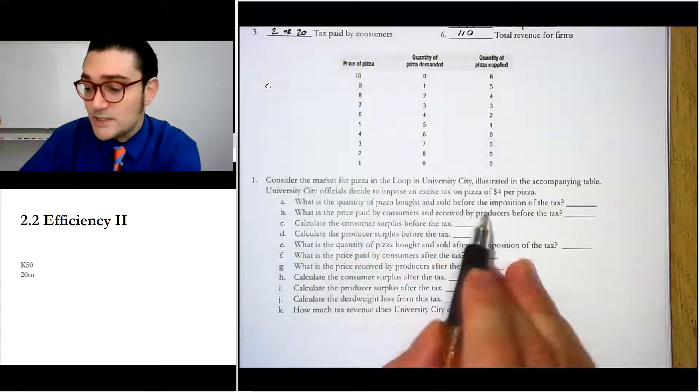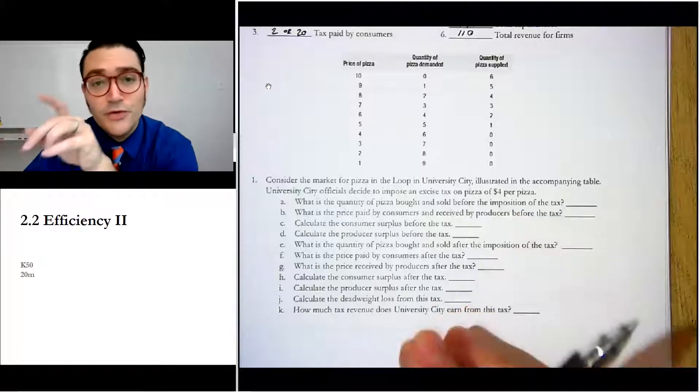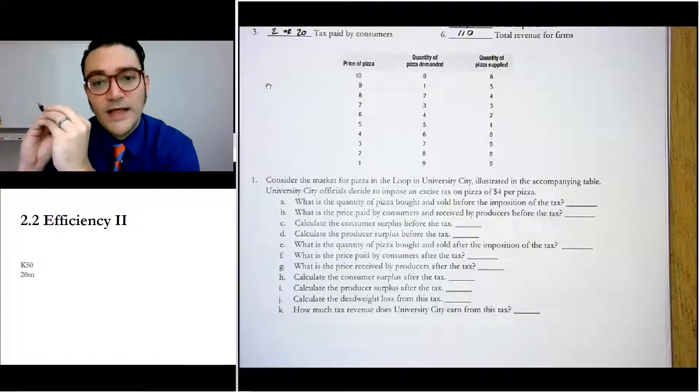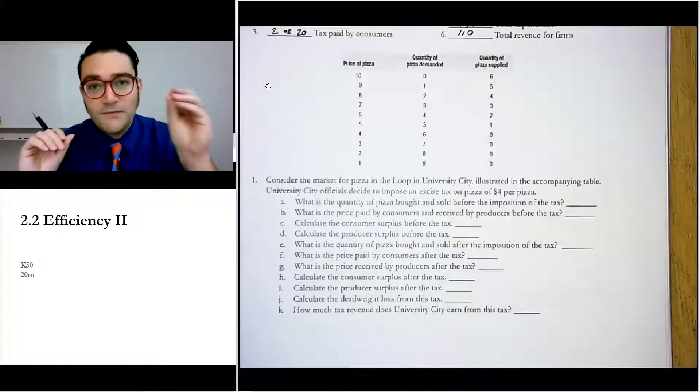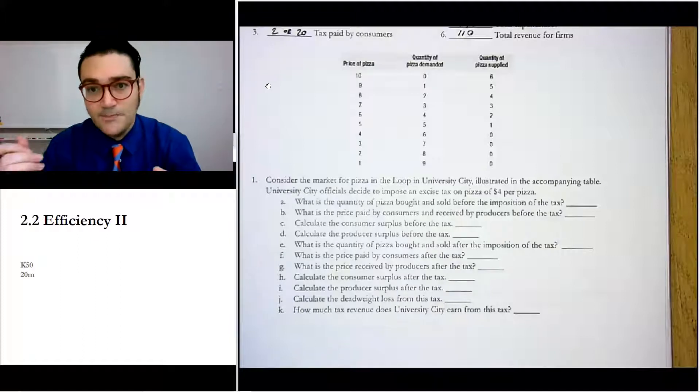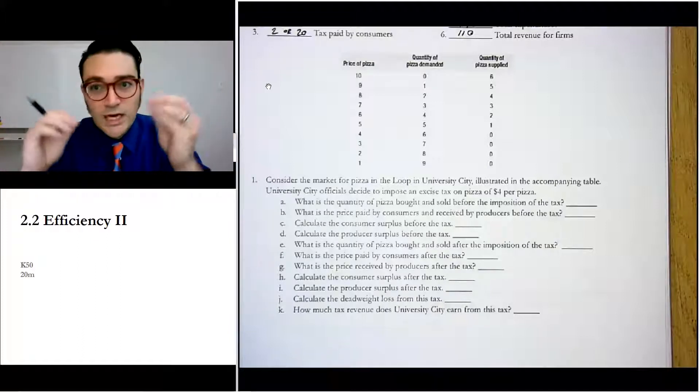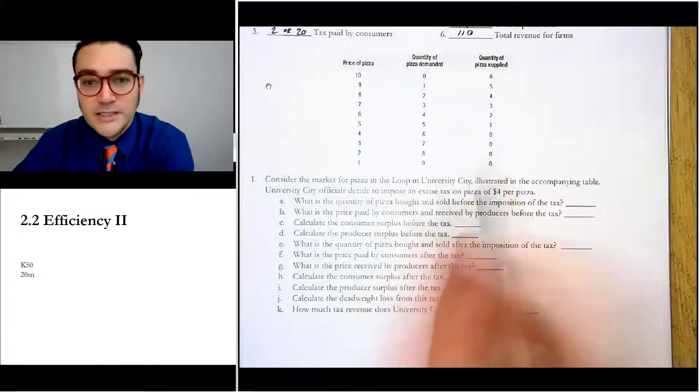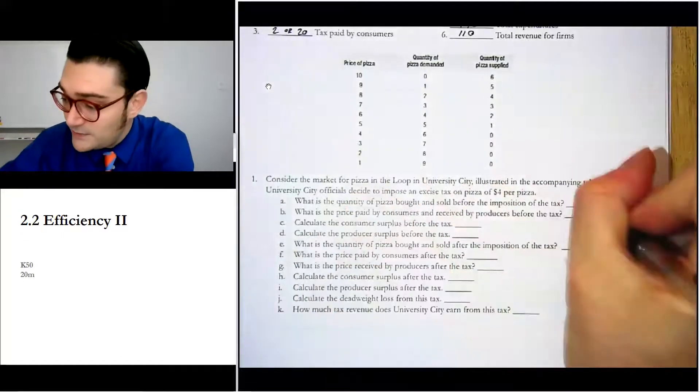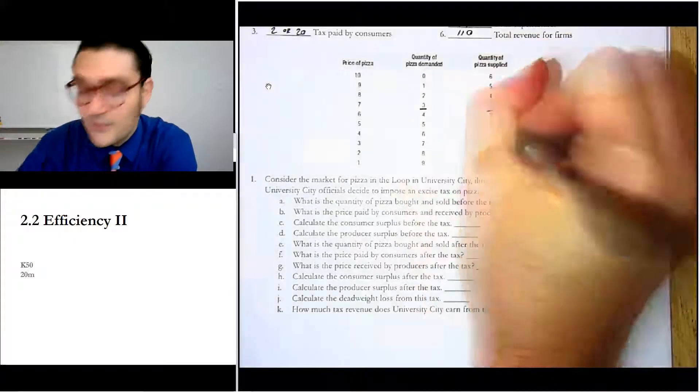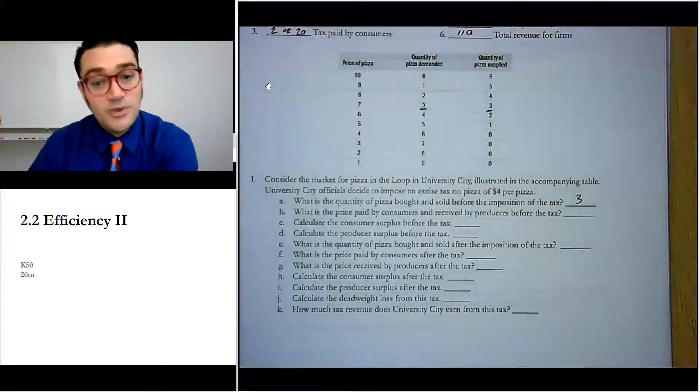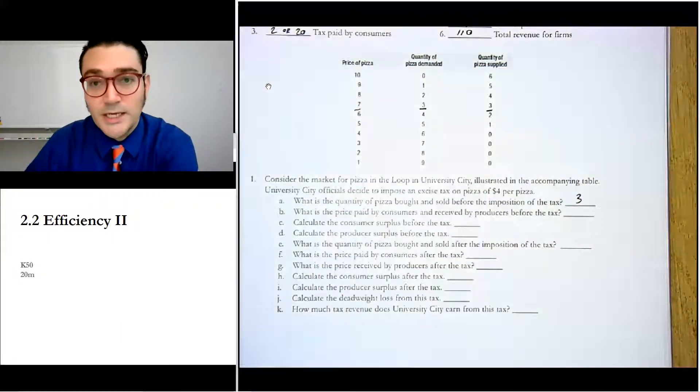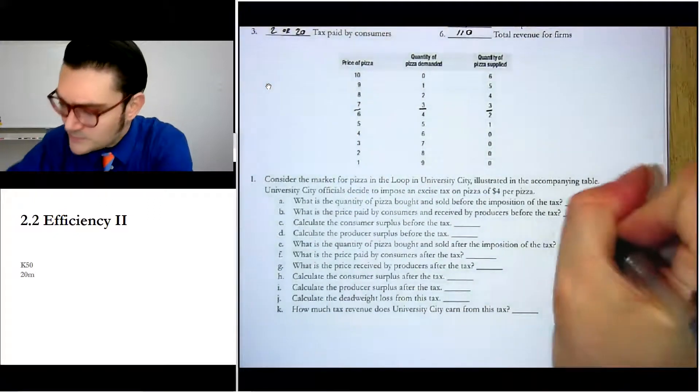Alright, so the first one says the quantity of pizza bought and sold before the imposition of the tax. We know that when there's no tax and this is a nice competitive market, then that quantity is going to be where quantity of pizza demanded equals quantity of pizza supplied. So we'll look in the two columns there and see where they're equal. Two, four, three, three, three. There we go. So it's three and three. And what's the price paid before the tax? Well, it's seven dollars because that's the price where quantity demanded equals quantity supplied.